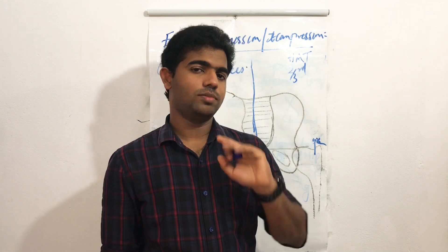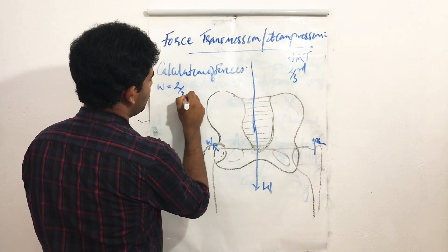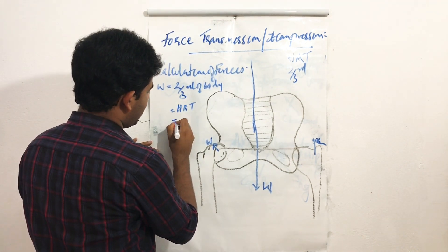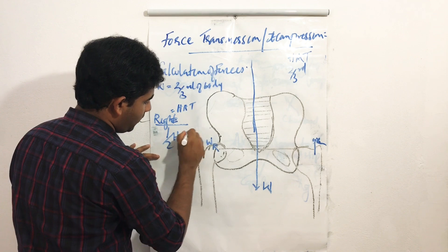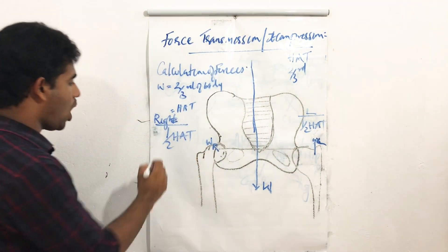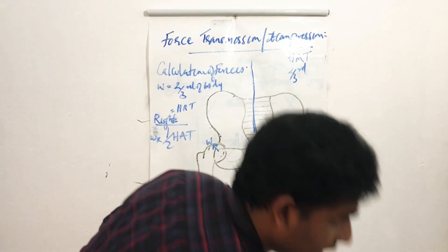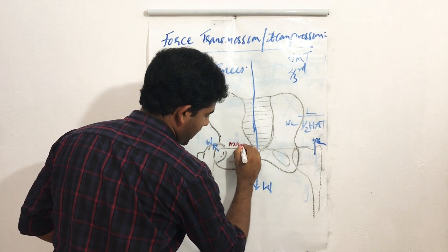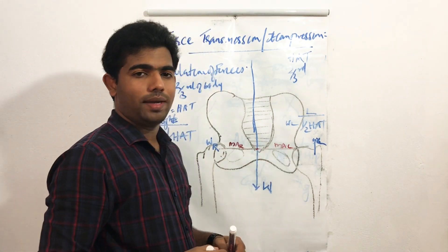Half the weight of the HAT is transmitted to your right hip joint and half to your left hip joint. So WR always equals WL in bilateral stance because the weight is transmitted equally to both hip joints. The perpendicular distance from the midline of the body to each hip joint — the moment arm — is denoted as MR (moment arm right) and ML (moment arm left).